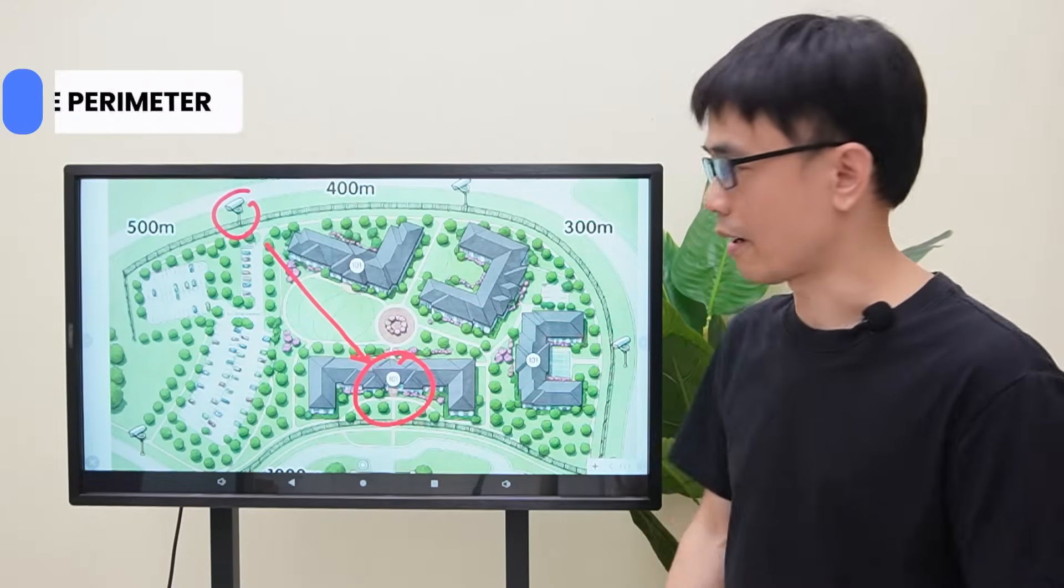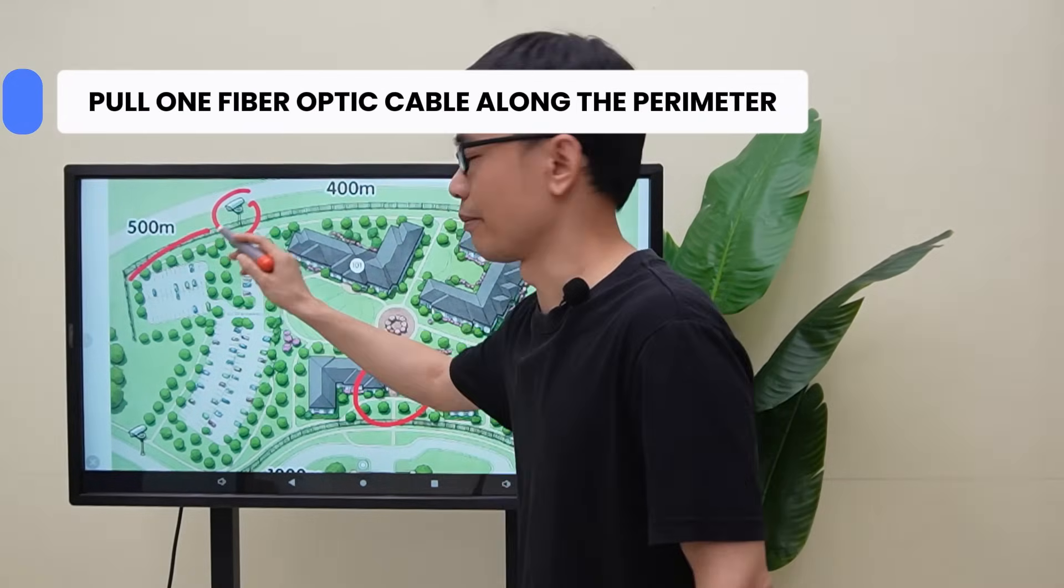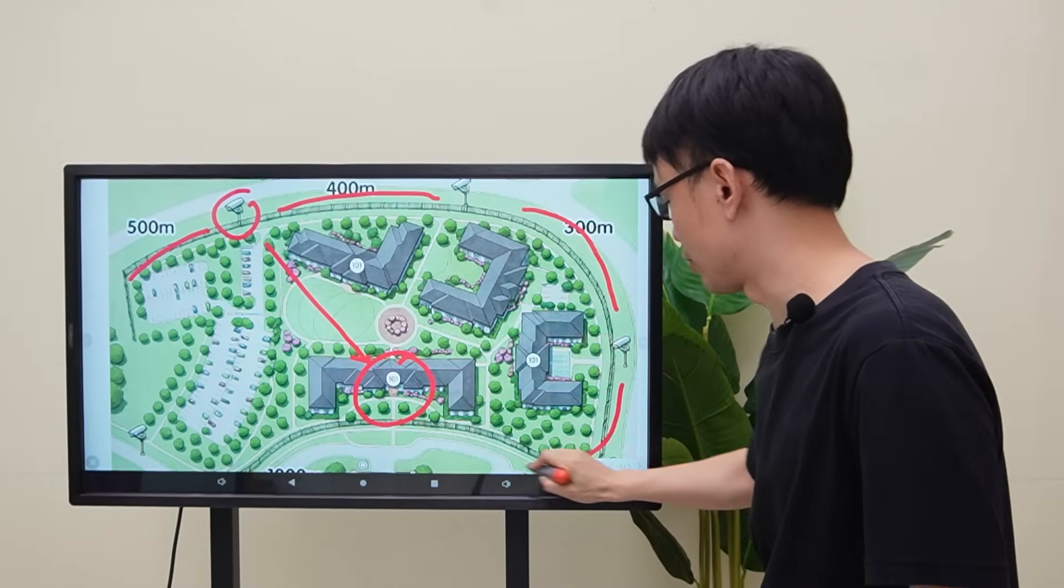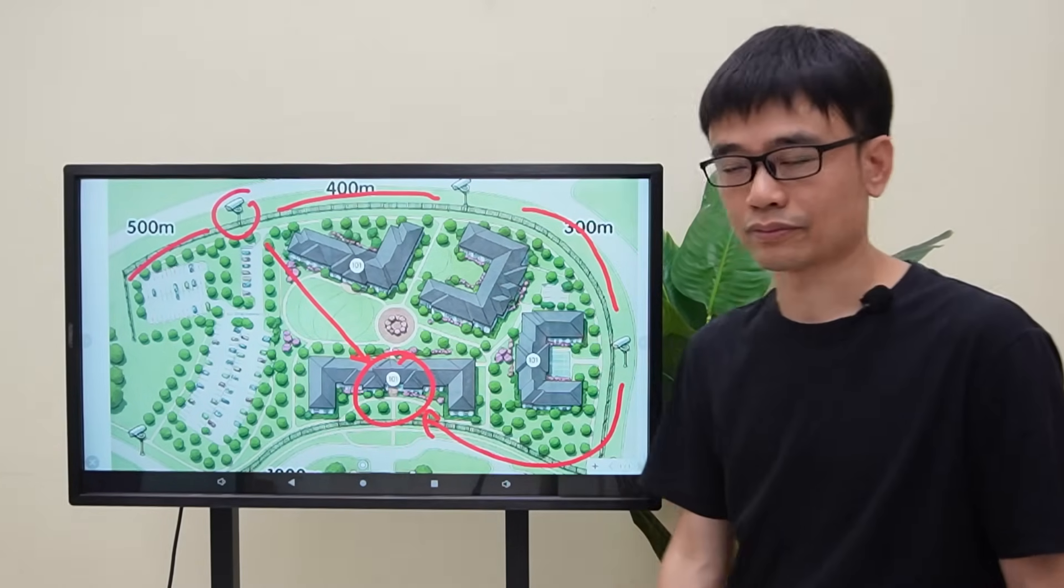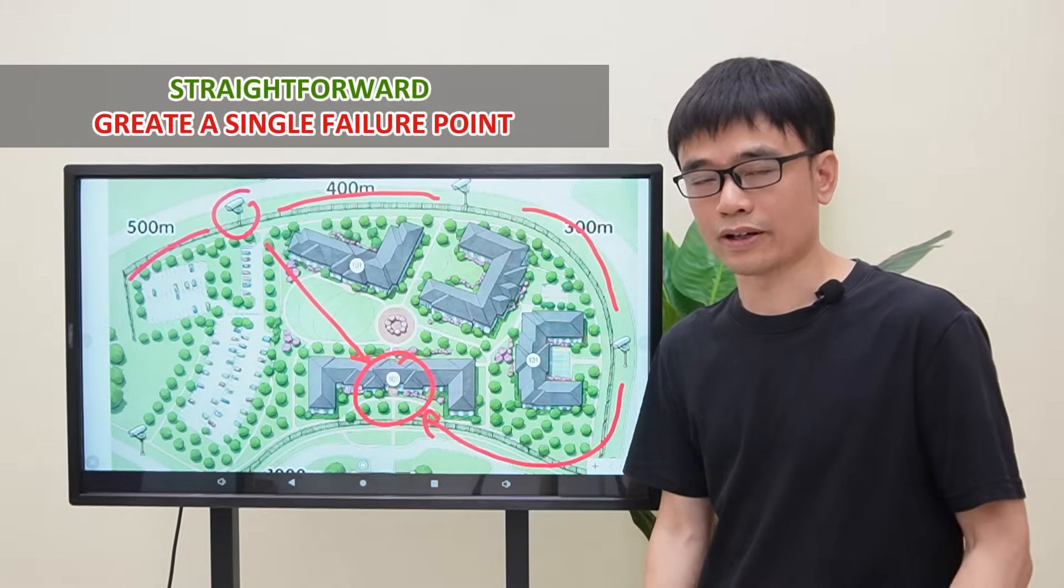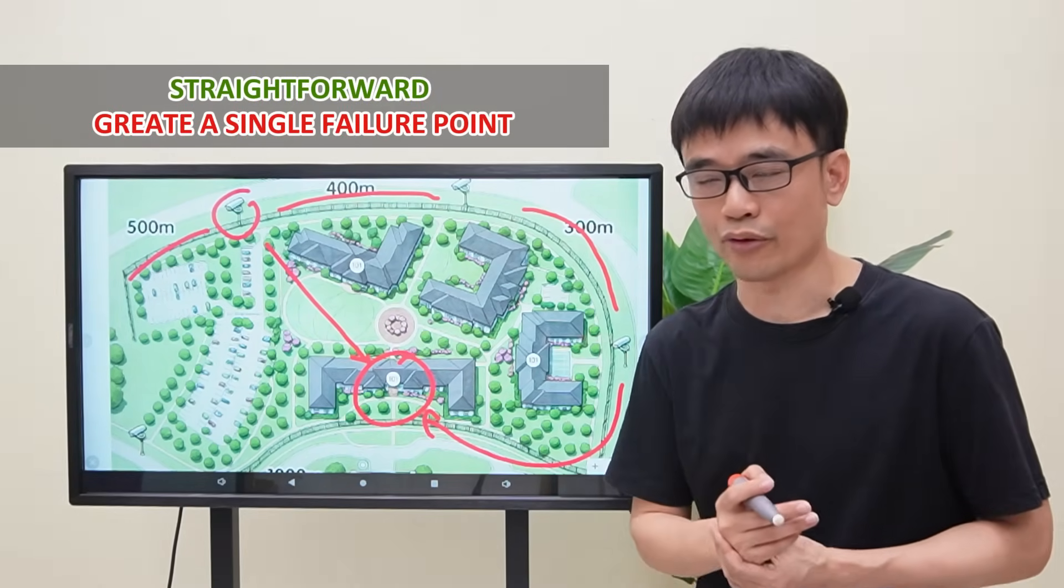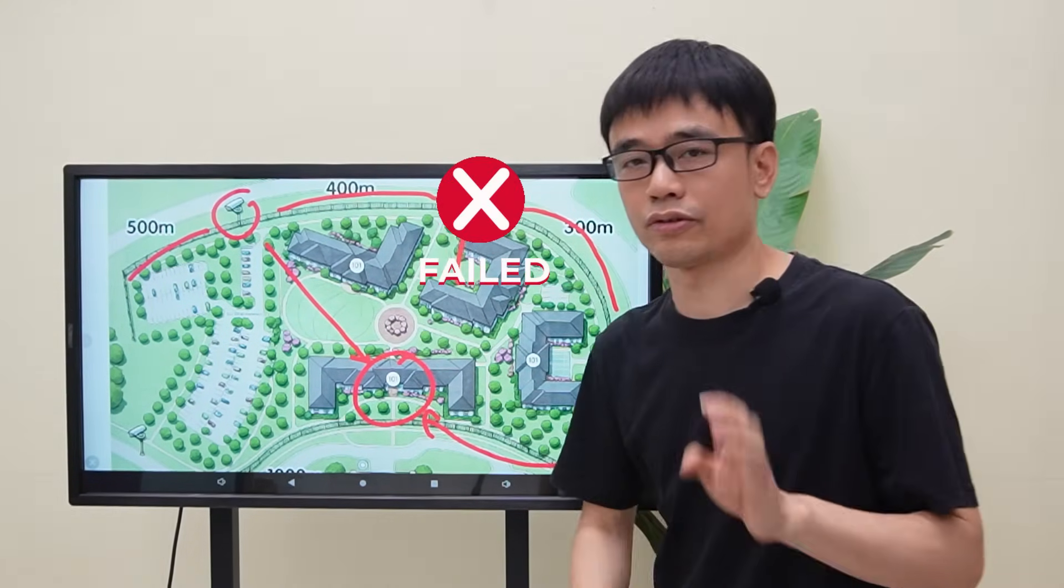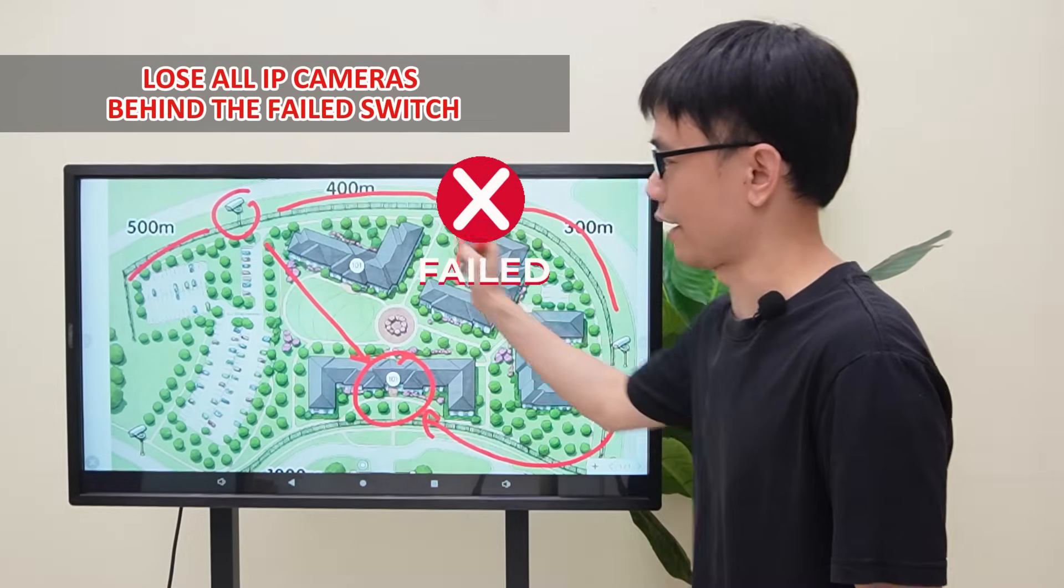They want to use one fiber optic cable following the perimeter of the property to link all outdoor PoE switches back to the control room. This strategy works, but creates a single point of failure. If this switch fails, it will lose all IP cameras behind these switches.